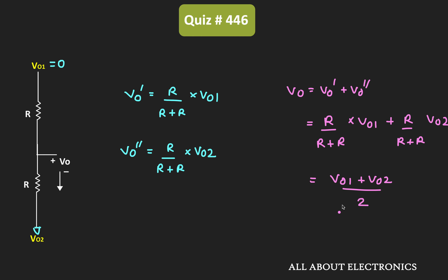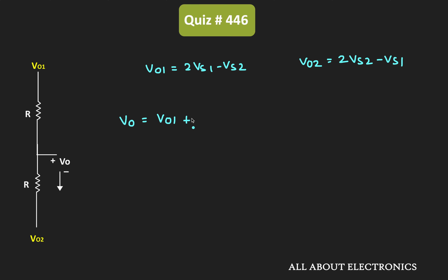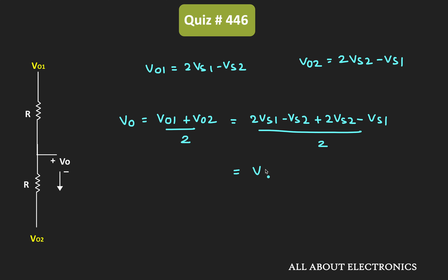We already found VO1 = 2·VS1 − VS2 and VO2 = 2·VS2 − VS1, and the output voltage VOout = (VO1 + VO2) / 2. Substituting these values gives VOout = (2·VS1 − VS2 + 2·VS2 − VS1) / 2, which simplifies to VOout = (VS1 + VS2) / 2.